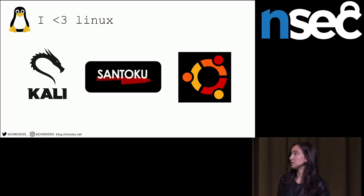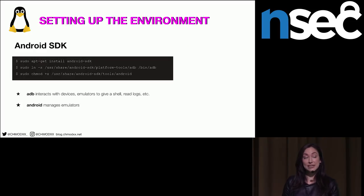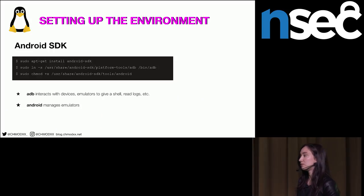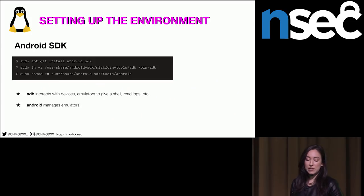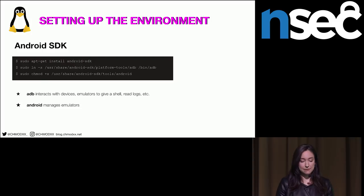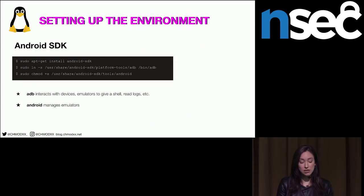The most important thing is having the Android SDK. You'll install it, create a symbolic link so you don't have to run it from the exact folder every time, and make the Android component executable. ADB — the Android Debug Bridge — is what interacts with your devices whether it's an emulator or a connected device. It gives you a shell, lets you read logs, and do a whole bunch of things. If you're running a 64-bit system, you'll need to install 32-bit headers and packages too.